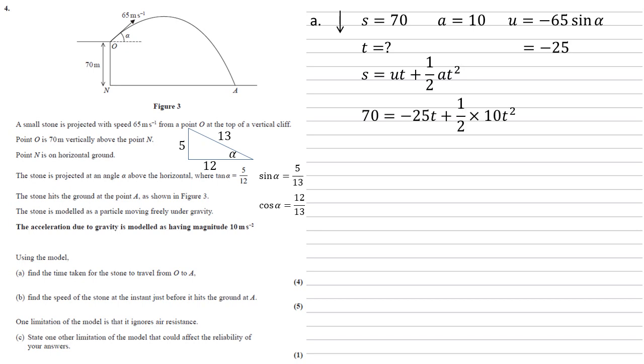we get 70 equals minus 25 T plus a half times 10 T squared. That's 70 minus 25 T plus 5 T squared. All of those are multiples of five. So let's divide through by five and move everything onto one side. We get T squared minus 5 T minus 14 equals zero.